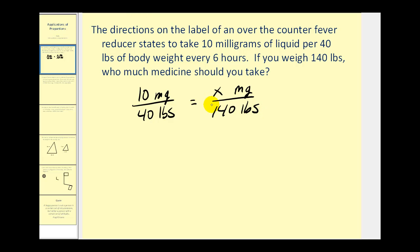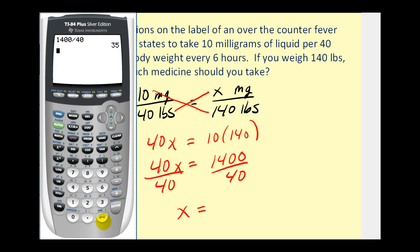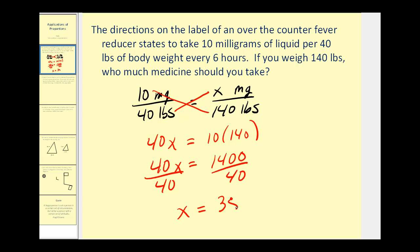These two must be equal and therefore form a proportion, therefore the cross products must be equal. So we'll leave off the units for right now. 40 times x must equal 10 times 140 and now we just need to solve this equation. So we have 40x equals 1,400. Divide both sides by 40 and 1,400 divided by 40 equals 35. So if x equals 35, you should take 35 milligrams of medicine if you weigh 140 pounds.